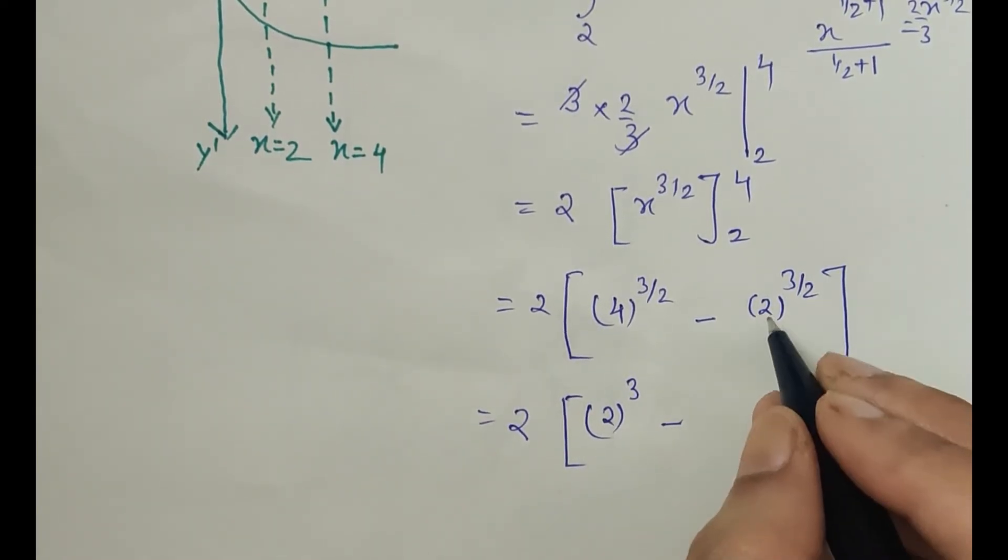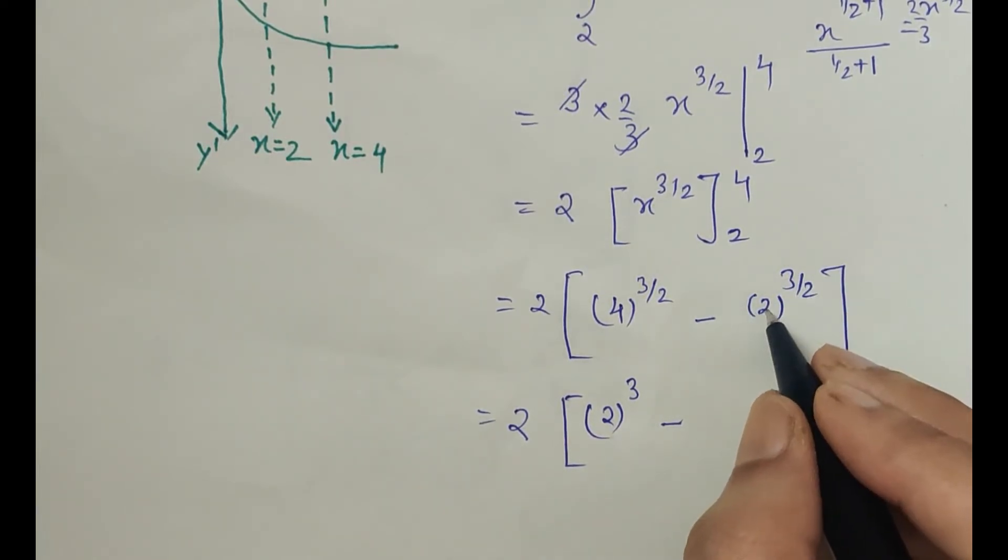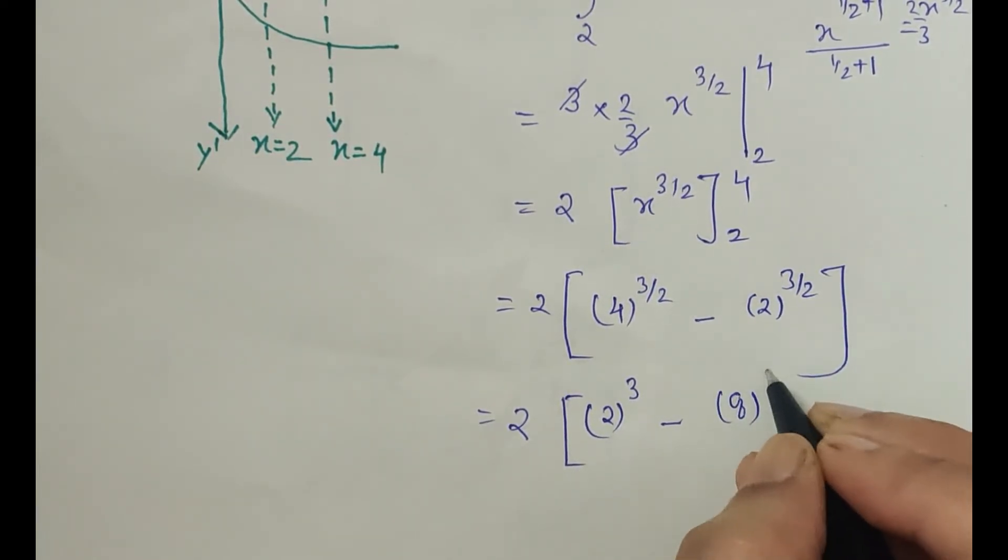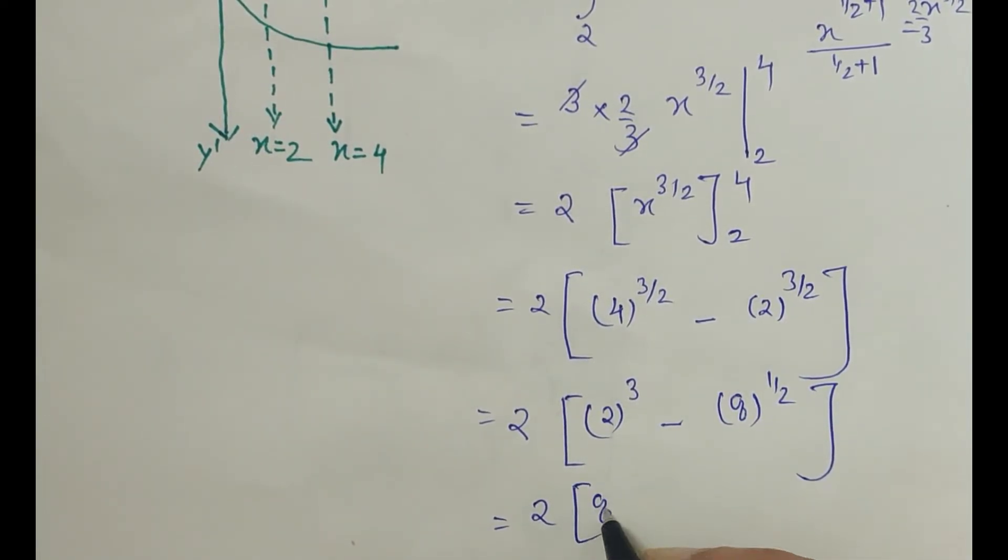So keep it as it is, or if I cube it, so it is 8. If it is 8^(1/2), now 2, and then this is 8 minus...